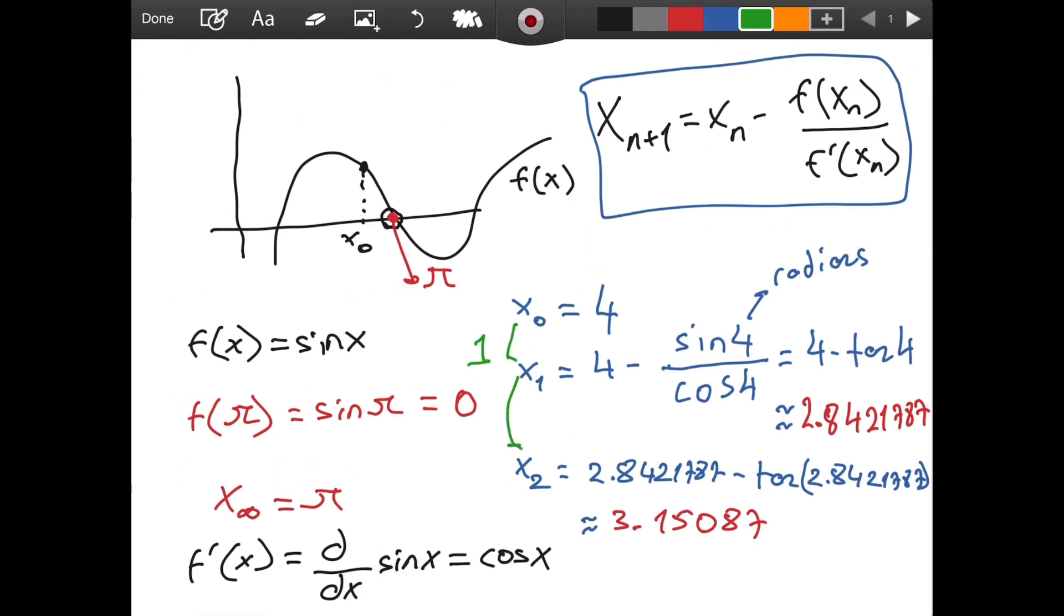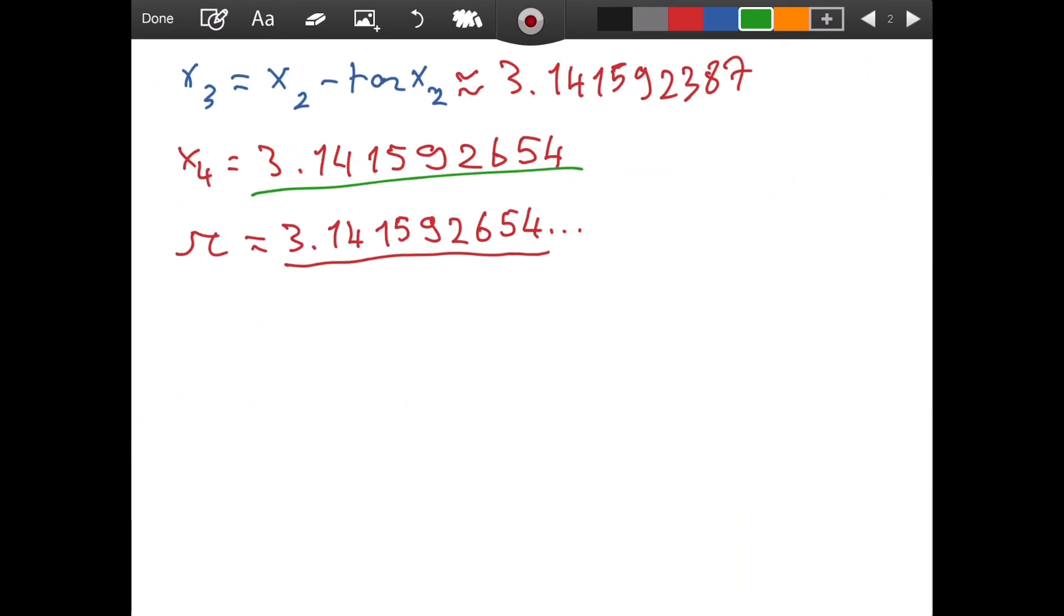only using four iterations to the exact same precision that my calculator gives to me. We did first iteration here, second one here, the third one was on a new page, and now the fourth iteration. So fourth iteration gave us gave us the same precision as our calculator.